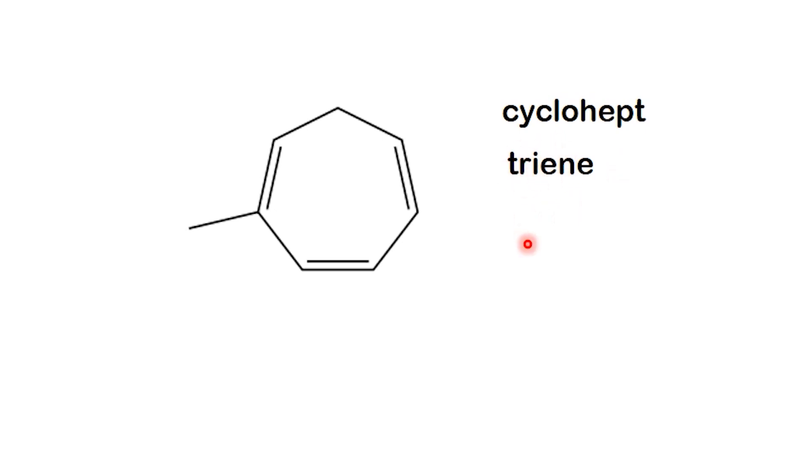The next step is numbering. We always start at a double bond and number around the ring to give the lowest positions to all the double bonds. This way, the double bonds are at carbons 1, 3, and 5. But notice something. If we number the other way around, the double bonds are still at 1, 3, and 5. So what makes the difference?